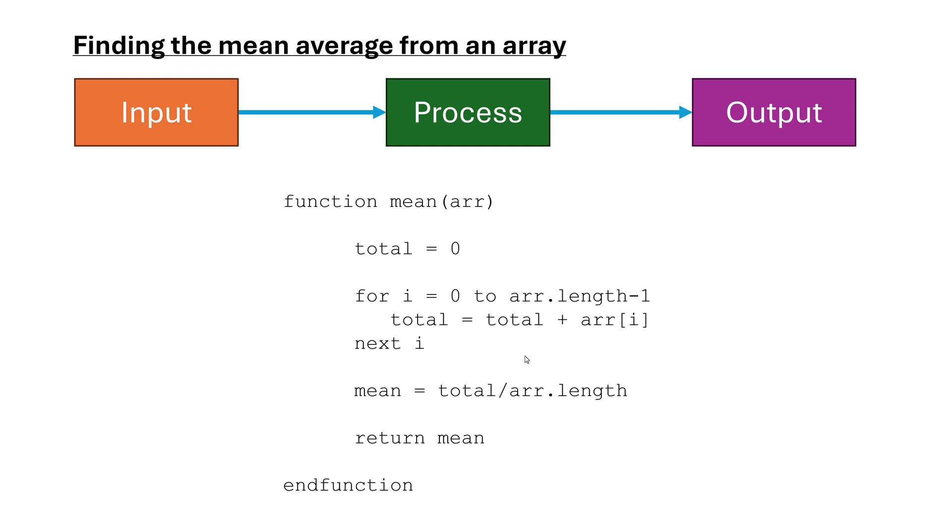I'm showing you this code because it's important you can see code like this. But also just to hopefully emphasize that inputs and outputs aren't always user inputs and prints. Here, I've not got a single user input or a single print. However, this is demonstrating input process output, because in a sub program, any parameter I have is an input. I might also have user input.